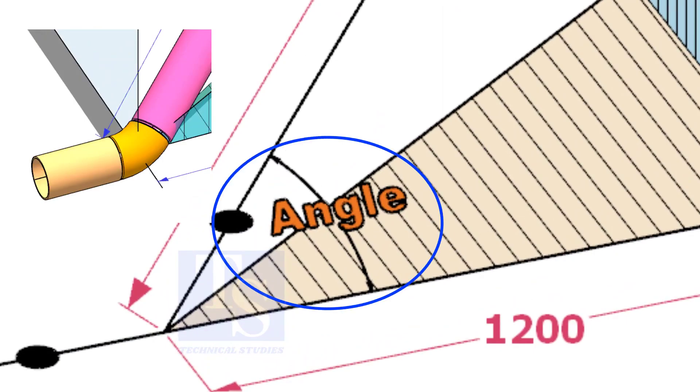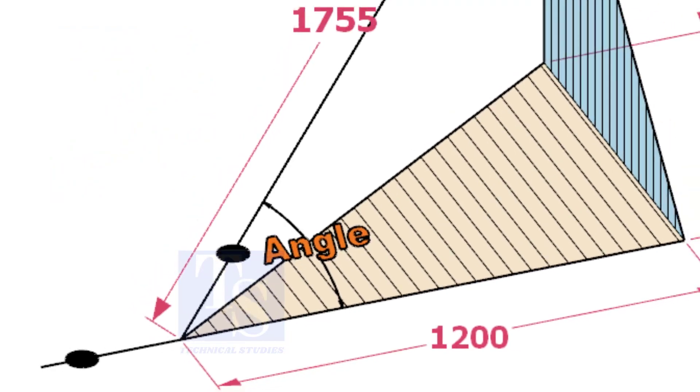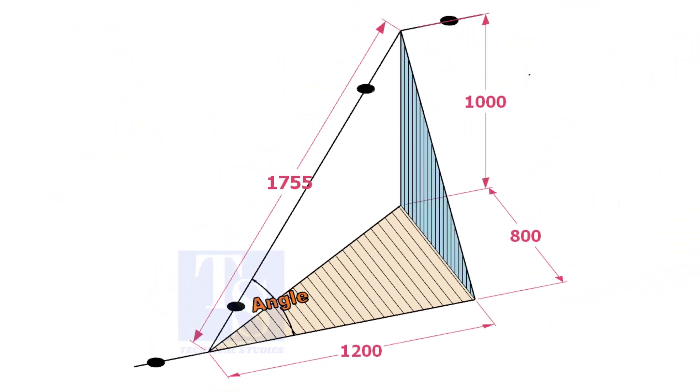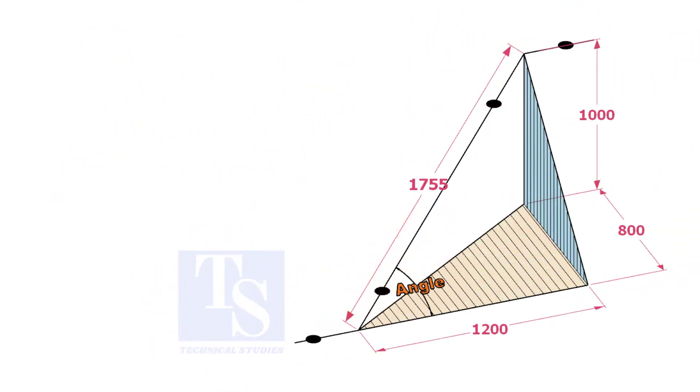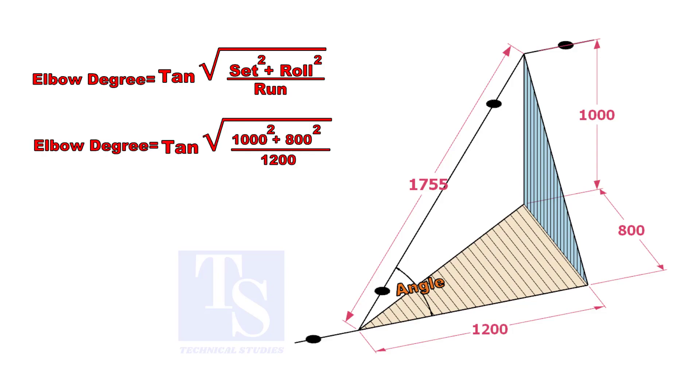Let us calculate the degree of the elbow or the including angle. The formula is tangent inverse of the square root of set squared plus roll squared, divided by run.